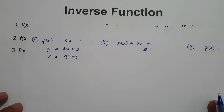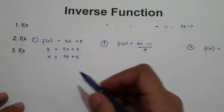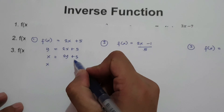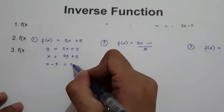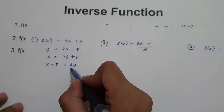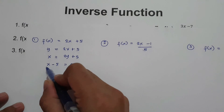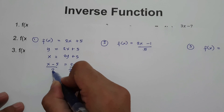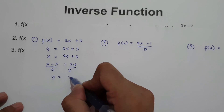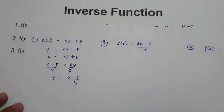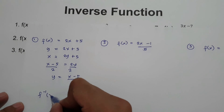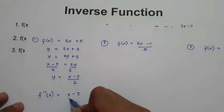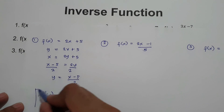Next, we are going to isolate the whole equation in terms of y. I'm going to move 5 to the side of x, so we have x minus 5 equals 2y. Then, to isolate y, divide the whole equation by 2. So y equals x minus 5 over 2. The inverse of the function is x minus 5 over 2.